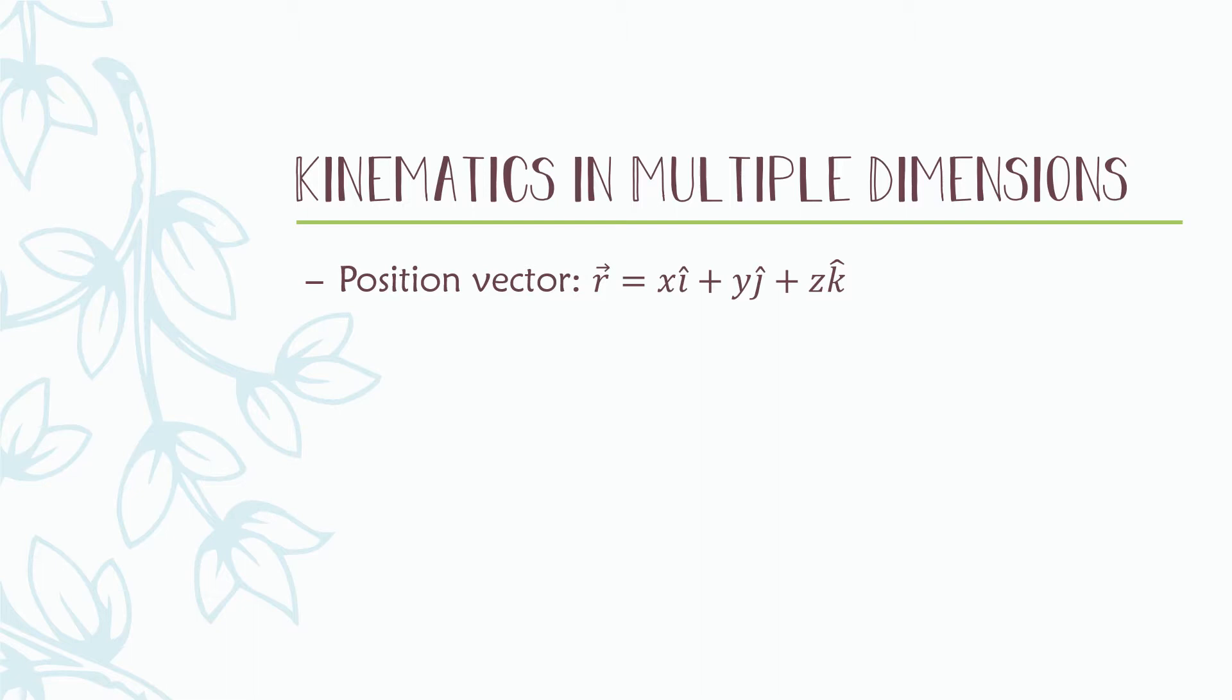Using what we learned about vectors, we can express the position vector in unit vector notation, and we use the symbol R for that position vector. We can express it using i hat, j hat, and k hat notation, showing where an object is located in a three-dimensional space.